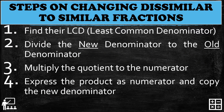Here are the steps on changing dissimilar to similar fractions. First, find the LCD, or the least common denominator. Second, divide the new denominator by the old denominator. Third, multiply the quotient by the numerator. And fourth, express the product as the numerator and copy the new denominator.